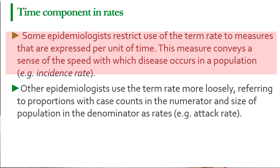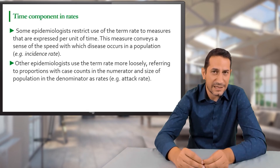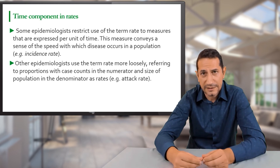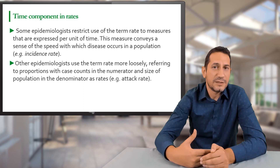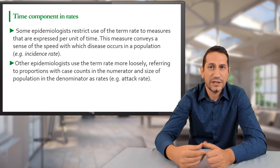Another group of epidemiologists uses the term 'rate' more loosely, applying it to measures that are technically proportions — for example, attack rates. However, it is preferred to reserve the term 'rate' for measures that include a time component, and to recognize that attack rates are technically proportions in our framework.